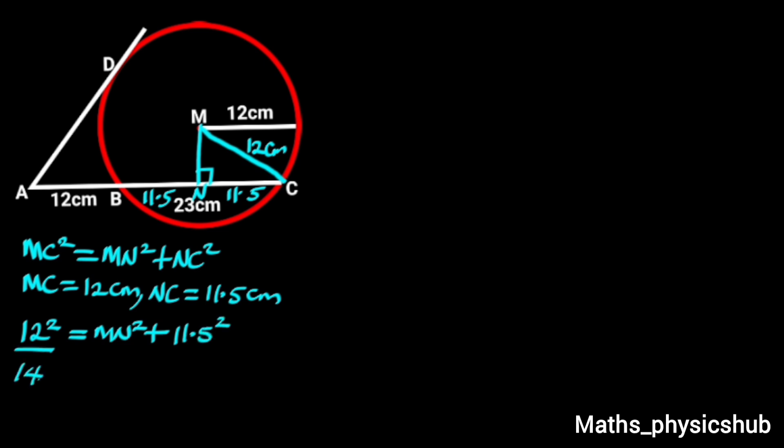12 square is 144, and 11.5 square is 132.25. So 144 equals MN square plus 132.25.